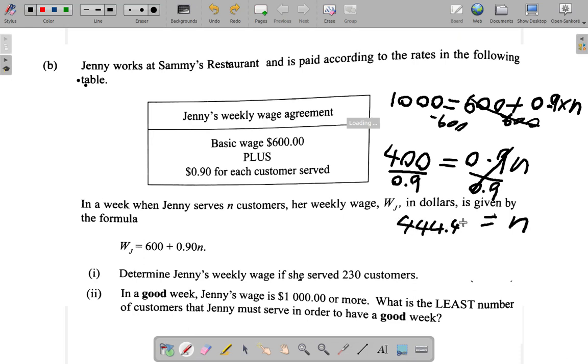So we have here 454.44. Now the number of customers n equals... Now the thing is, if Jenny serves 454, her pay will drop below the $1,000, and you don't have 454.44 customers. It must be a whole number.